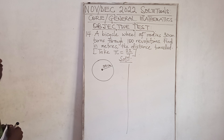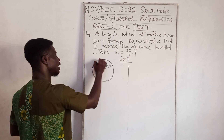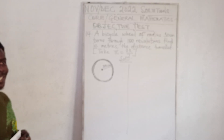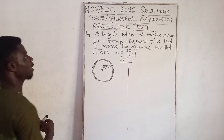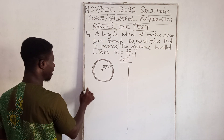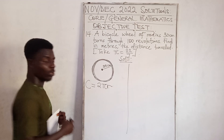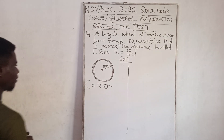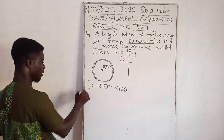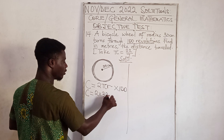It turns 100 revolutions, meaning it goes around 100 times. The distance traveled equals the circumference times the number of revolutions. The circumference is 2πr, or πd. So the total distance equals 2πr times 100.